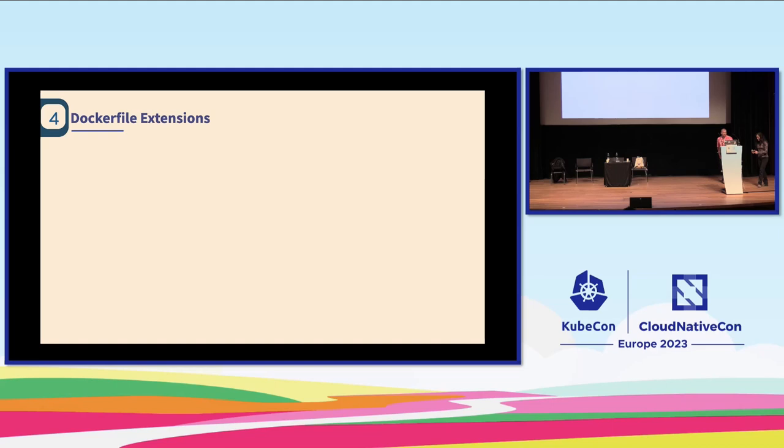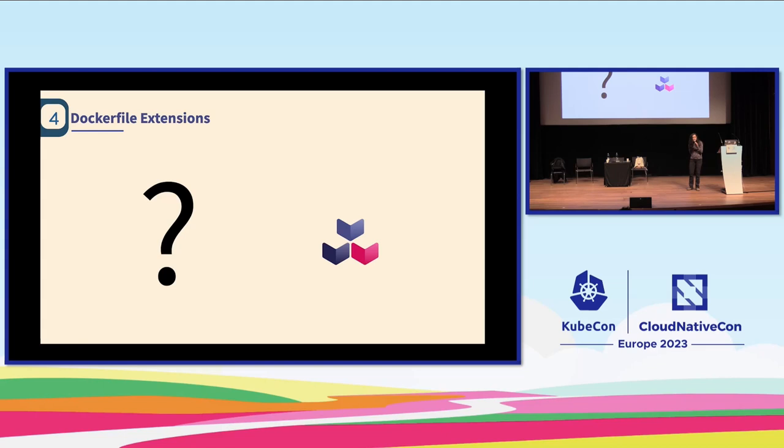Great. Hello. We did say at the beginning of this talk that buildpacks take your source code and turn it into OCI images without the use of Dockerfiles. So you might be wondering what we mean by Dockerfile extensions and how they fit into a buildpacks build. To understand the need for this escape hatch, we have to talk a little bit about the CNB specification.